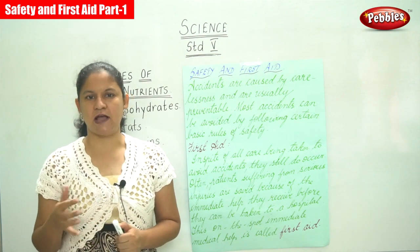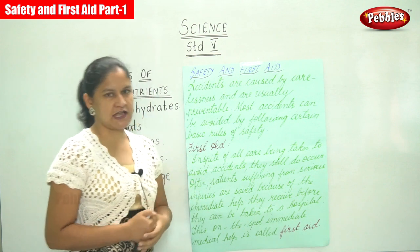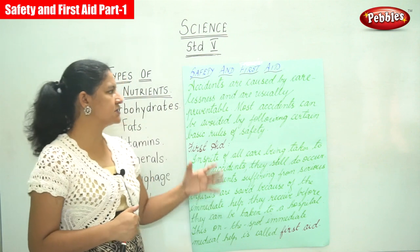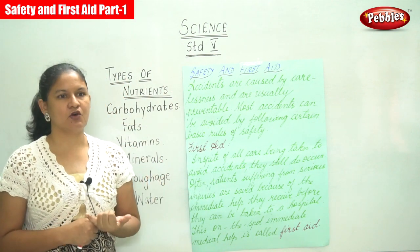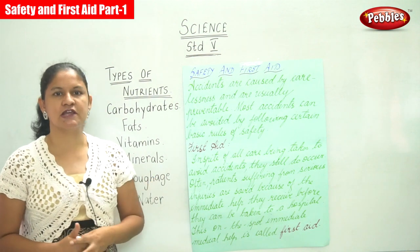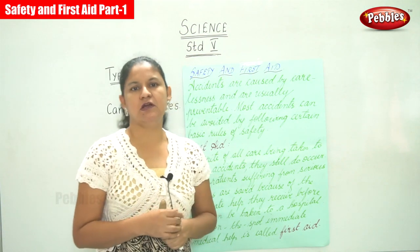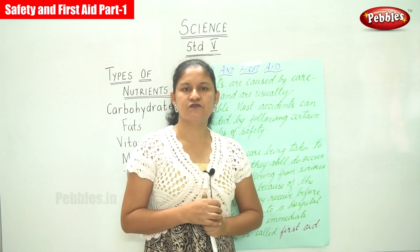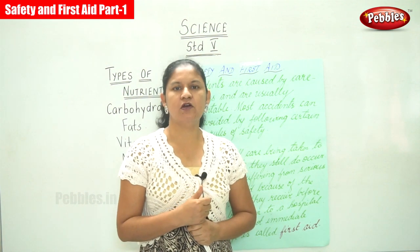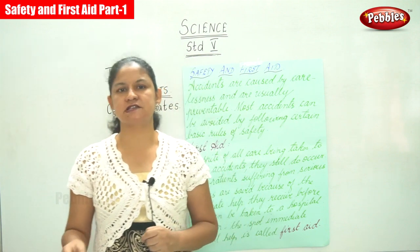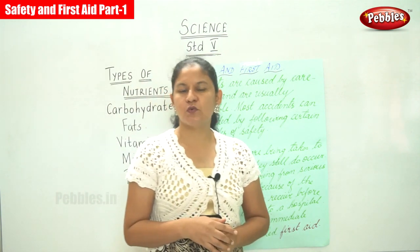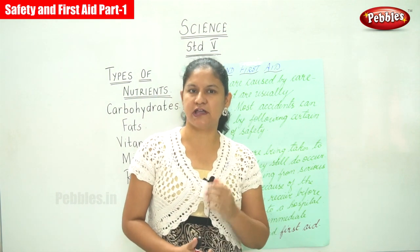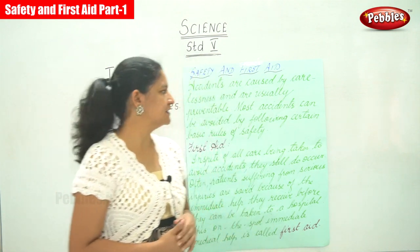Accidents are caused by carelessness and are usually preventable. For example, if a child takes a knife in his or her hand, it is always good for an adult to remove it immediately and not just look at the child and leave it — that is carelessness. We can prevent accidents by being extra careful and cautious.